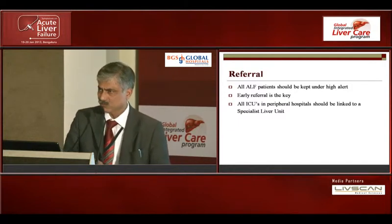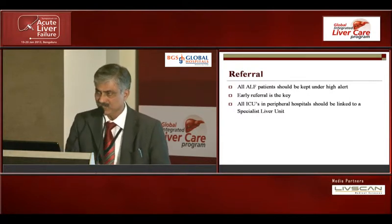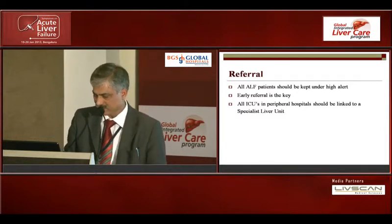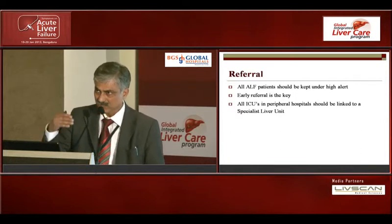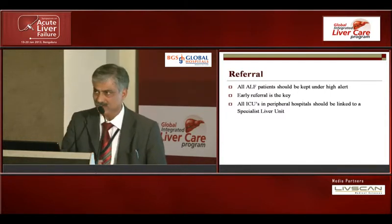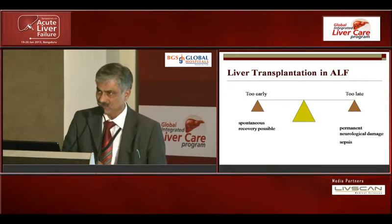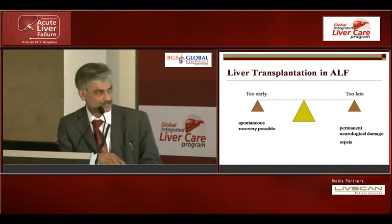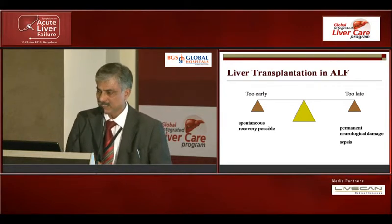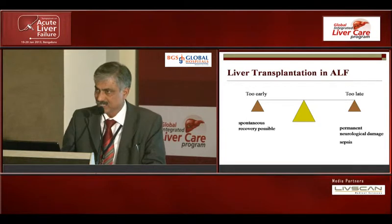All ICUs across the country should be linked to a specialized liver unit, preferably one with a backup for liver transplantation, and this network should be developed on a country-wide basis. Not all ALF patients need to be shifted — 30 to 40 percent may improve on medical measures alone — but we must identify those who will be sick and refer them at the right time. Transplanting too early removes their chance of spontaneous survival; waiting too long risks neurological damage and infections.